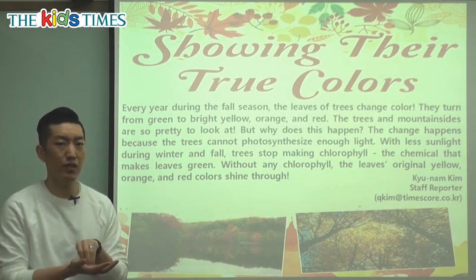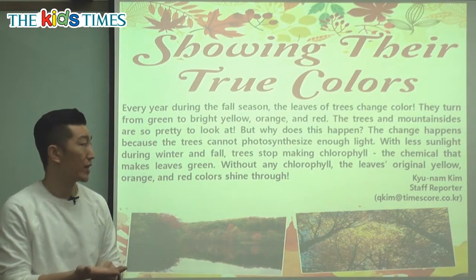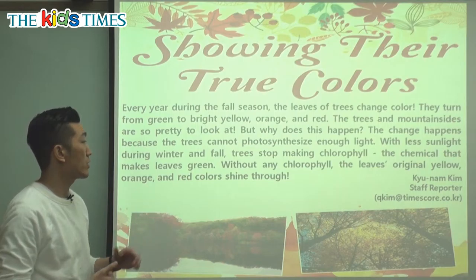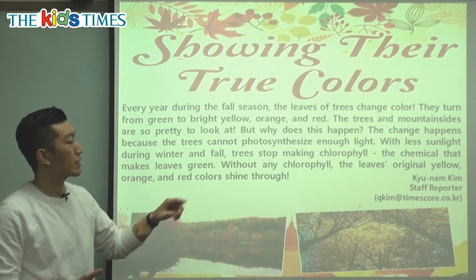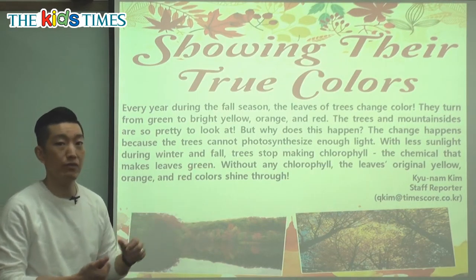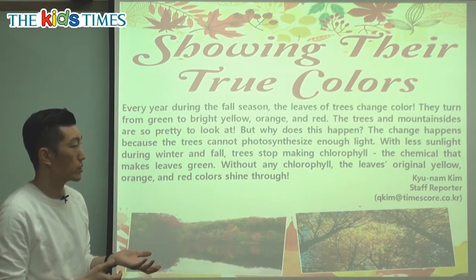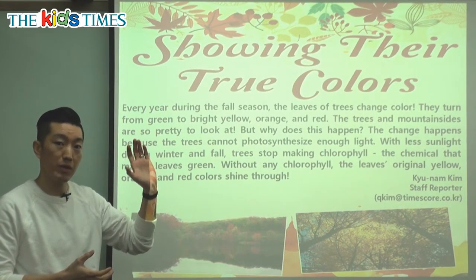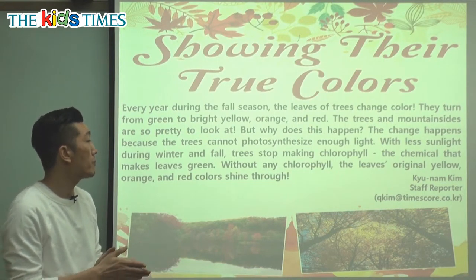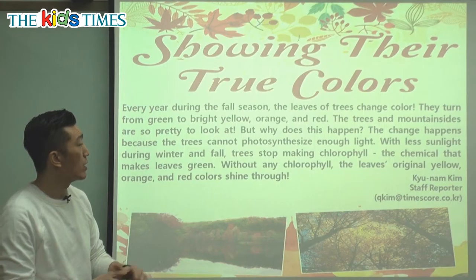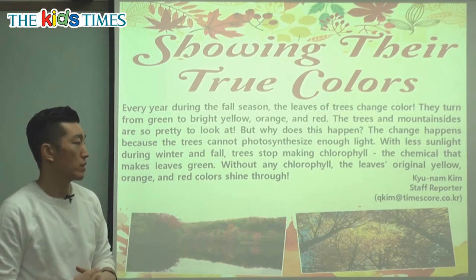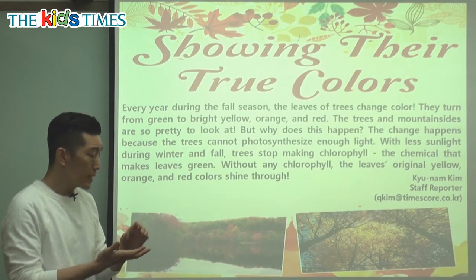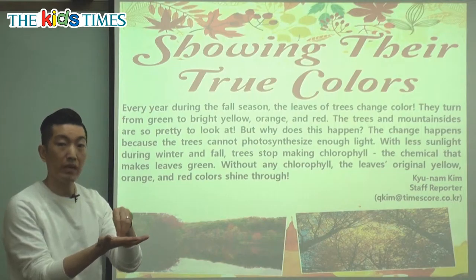That's why they're green — the food that they make has a green color to it. The leaves stay green because they're able to make a lot of food using the sunlight in the summer and spring. Because the trees cannot make enough food, because they don't have enough light, that's why they start changing colors. Trees stop making chlorophyll — the chemical that makes leaves green.